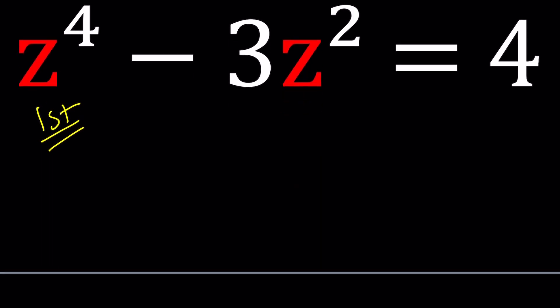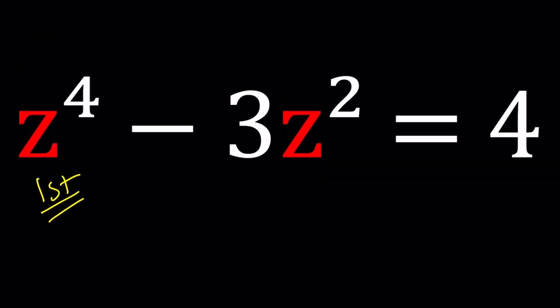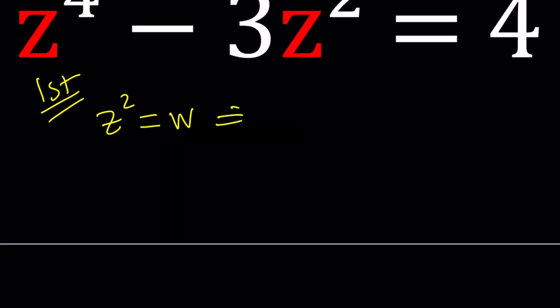For my first method I'm going to use what seems to be the obvious substitution. Since we have z to the fourth and z squared, that's what bi-quadratic means. We don't have z cubed, we don't have z. We only have the even powers. So we can go ahead and replace z squared with something, how about w? This implies w squared minus 3w equals 4. And yay, this is a quadratic equation.